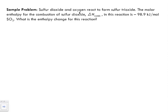Sample problem: sulfur dioxide and oxygen react to form sulfur trioxide. The molar enthalpy for the combustion of sulfur dioxide, ΔH combustion, in this reaction is -98.9 kilojoules per mole of SO2. What is the enthalpy change for this reaction? Now, a few things to note: we've got a negative change in enthalpy, which means we know that this reaction is exothermic.